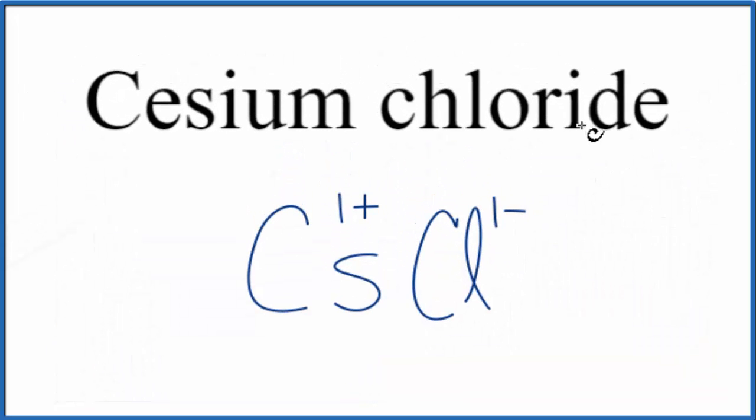Because cesium chloride is neutral, it doesn't say ion after the name. Because this is a neutral compound, the ionic charge needs to add up to zero, have a net charge of zero. 1 plus and 1 minus, that adds up to zero. So the formula for cesium chloride is CsCl.